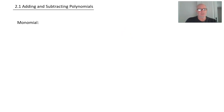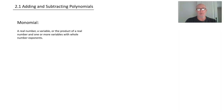So let's get some terms straight. First is a monomial. A monomial is a real number, a variable, or the product of a real number and one or more variables with whole number exponents.